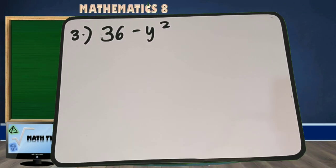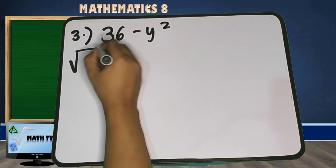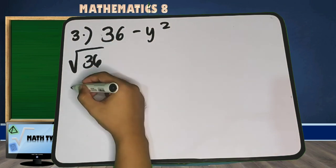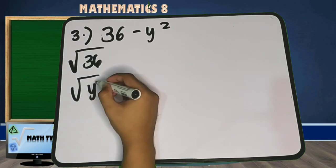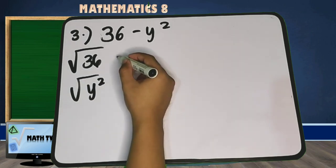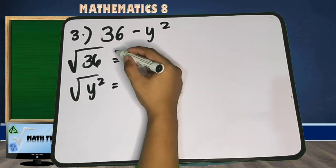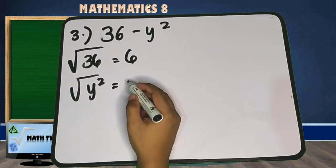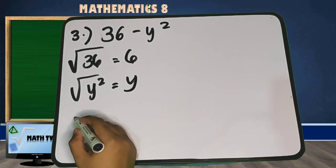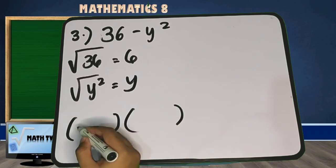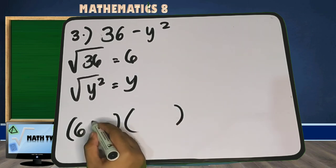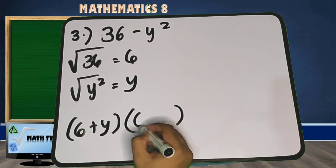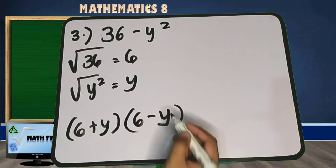Number 3: 36 minus y squared. Find the square root of the first term and the square root of the second term. The square root of 36 is 6. The square root of y squared is y. So our factor now is 6 plus y times 6 minus y.